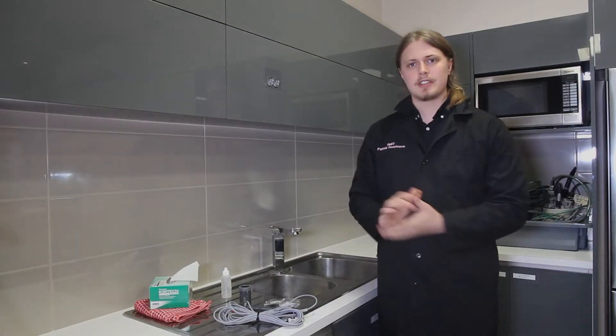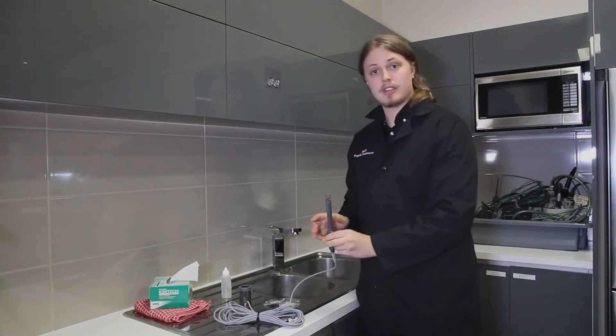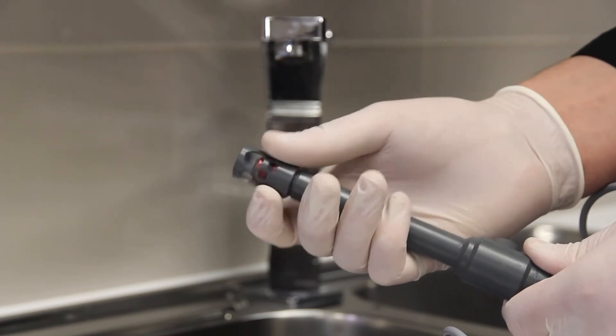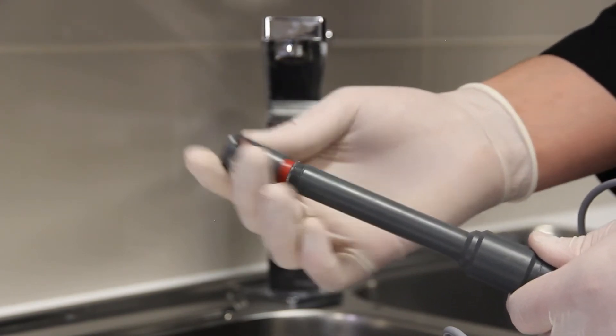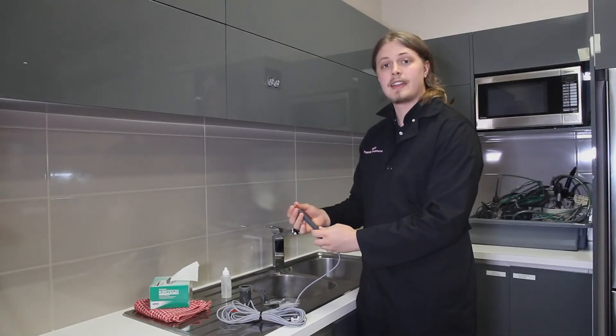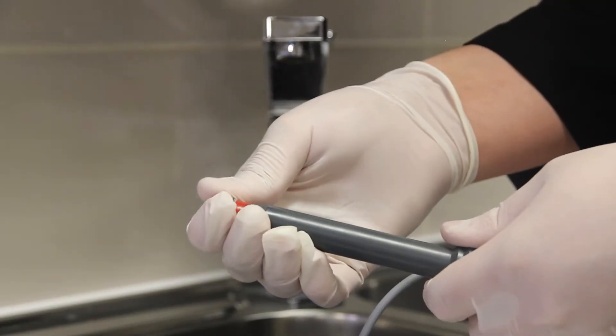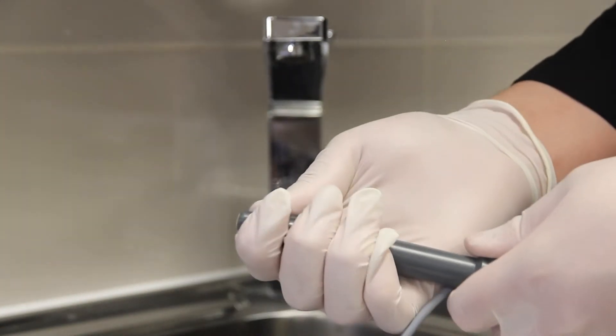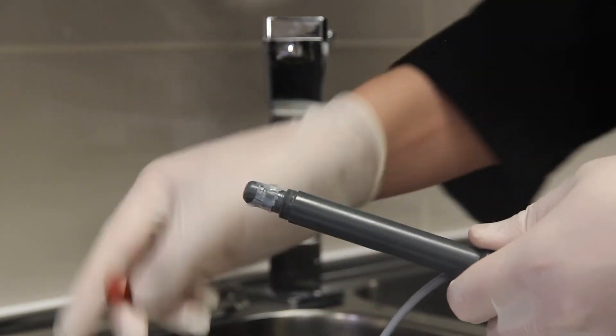Okay, first take your sensor and remove the tip by unscrewing it. Set it aside, then remove all the components from the tip by sliding them off with your finger and thumb, and place those aside.